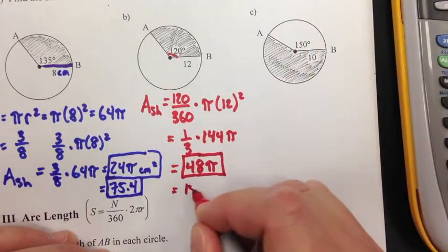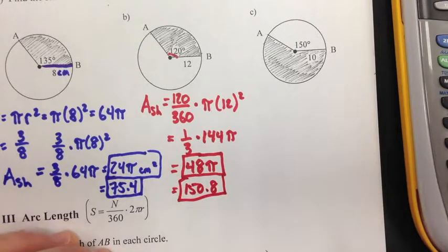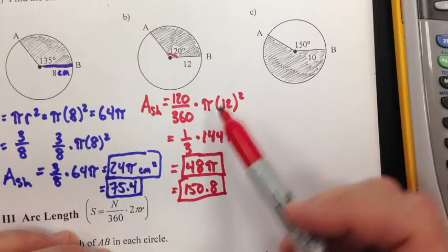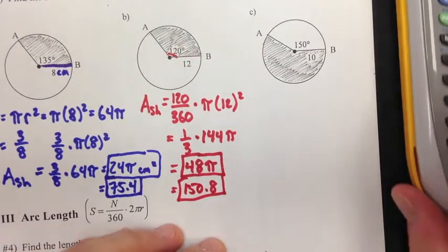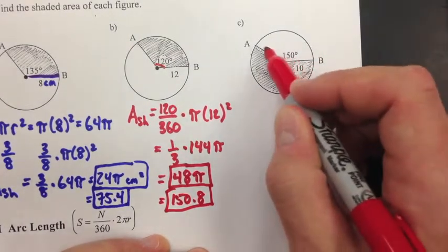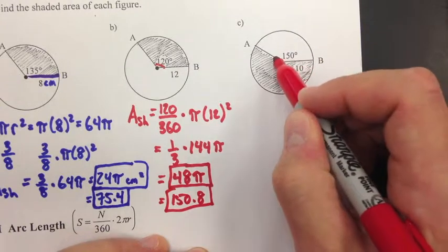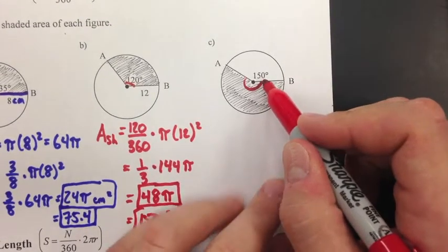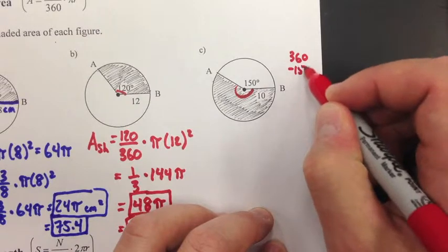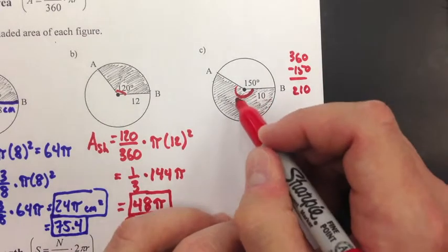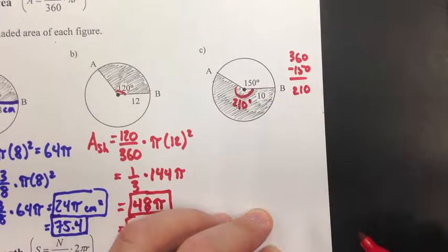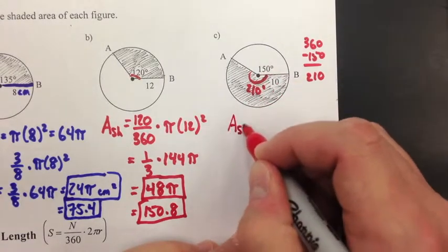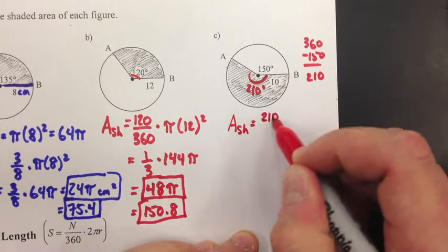48 pi equals approximately 150.8, so both 48 pi and 150.8 are good answers. Take the fraction of the circle times the whole area and you get the shaded portion. For part c, the central angle given is 150 degrees, but the part we're looking at is whatever's left over. Since all central angles add up to 360, we do 360 minus 150, which gives us 210. So the central angle measures 210 degrees.